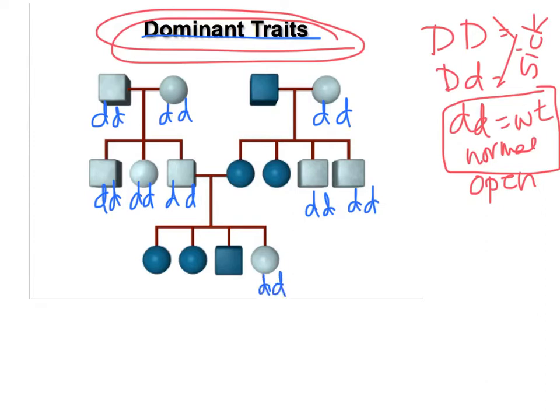So then what do we know about the other ones? Well, it depends. Sometimes we have to look at parents, sometimes we have to look at the kids. So anyone that's colored in we know has to have at least one big D — could have two, might have the little allele, but at least one big D. So we can put that in for each one of these to help us remember.